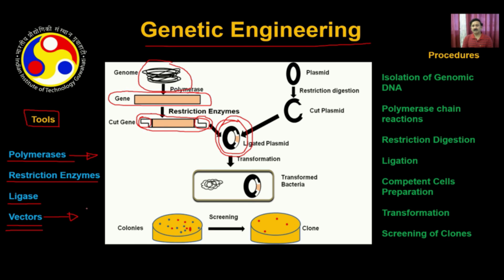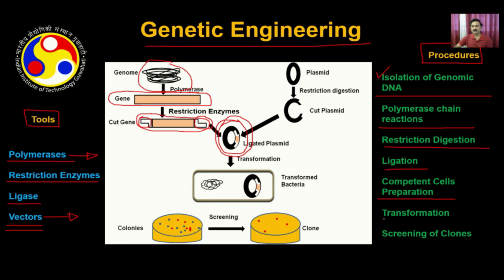With this, we would like to conclude our lecture. In the subsequent lecture, we are going to discuss different types of procedures: isolation of genomic DNA, PCR, restriction digestions, ligations, competent cell preparation, transformation, and screening of clones so that you will be able to see how recombinant DNA is generated. Thank you.